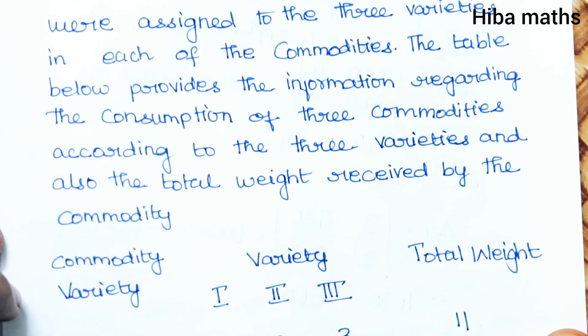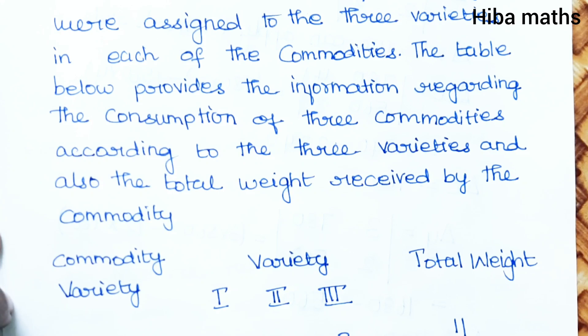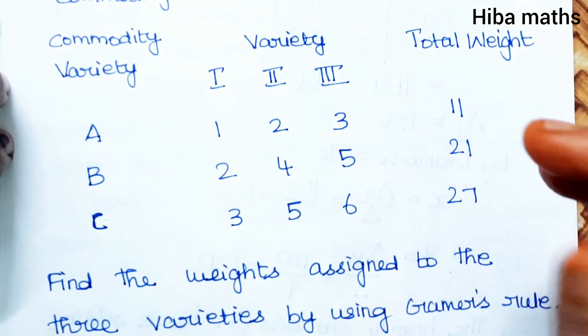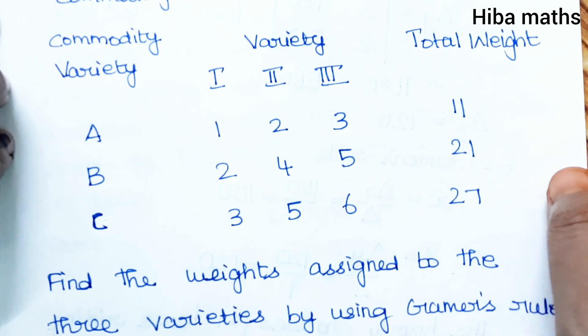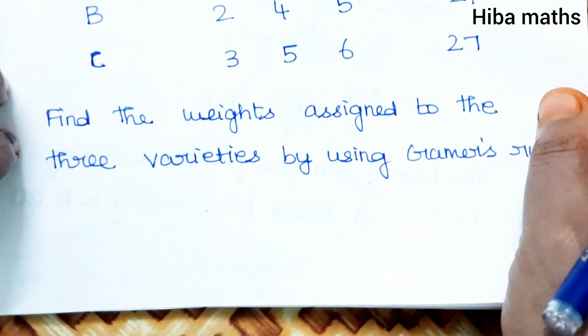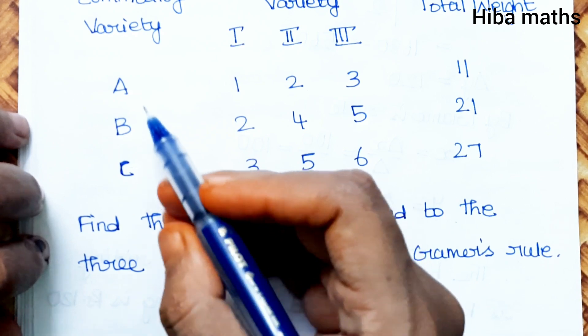According to the three varieties and also the total weight received by the commodity. The three commodities consumption according to that and the three varieties, total weight received.